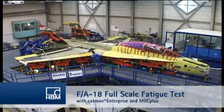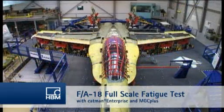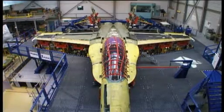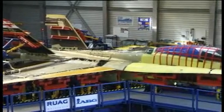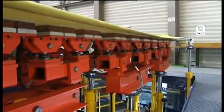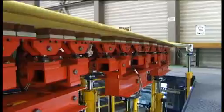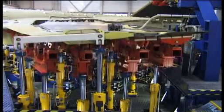And Catman Enterprise benefits smaller projects. Take the reinforced structure of the F-A-18 fighter plane. Swiss authorities needed a complex, large-scale investigation. This required 68 hydraulic cylinders to simulate realistic in-flight stresses. A full-scale fatigue test was also essential.